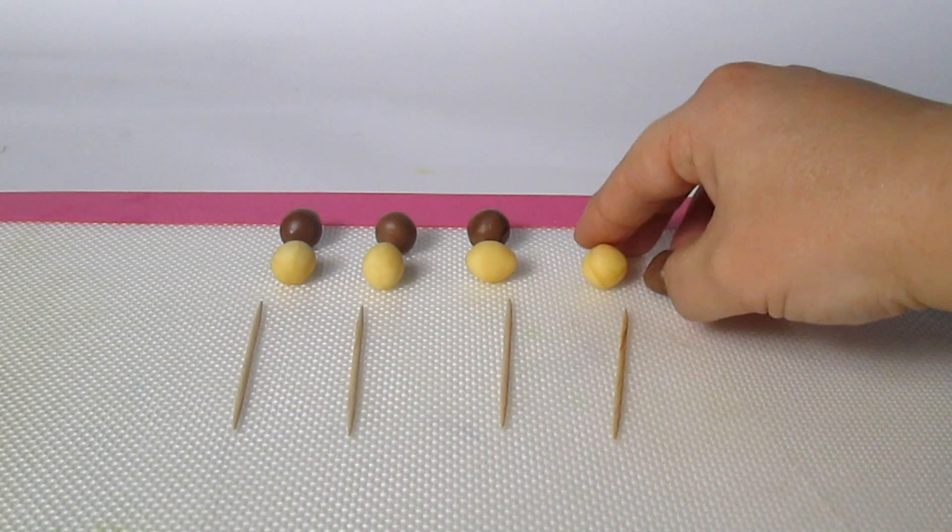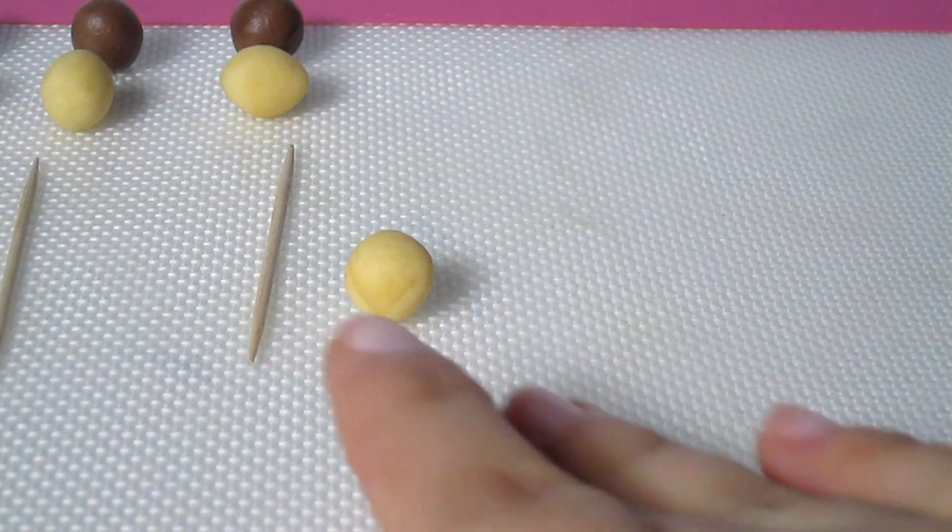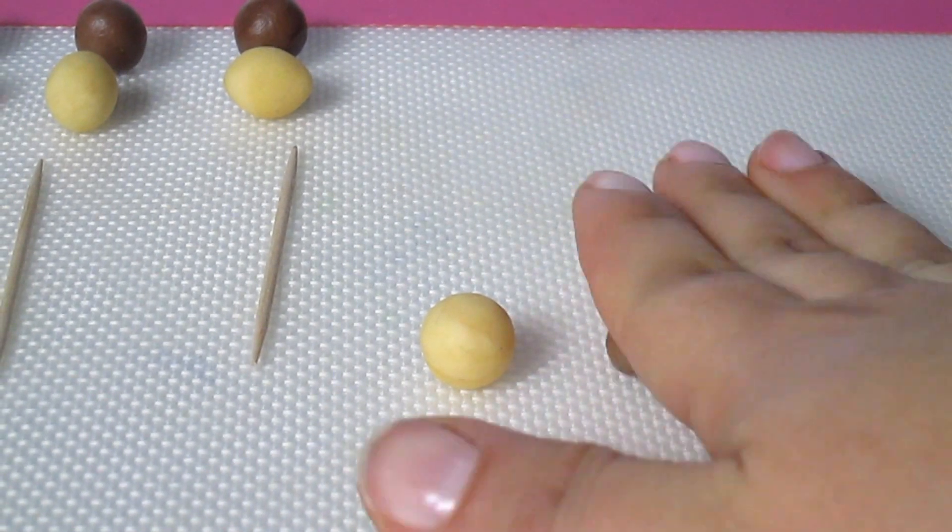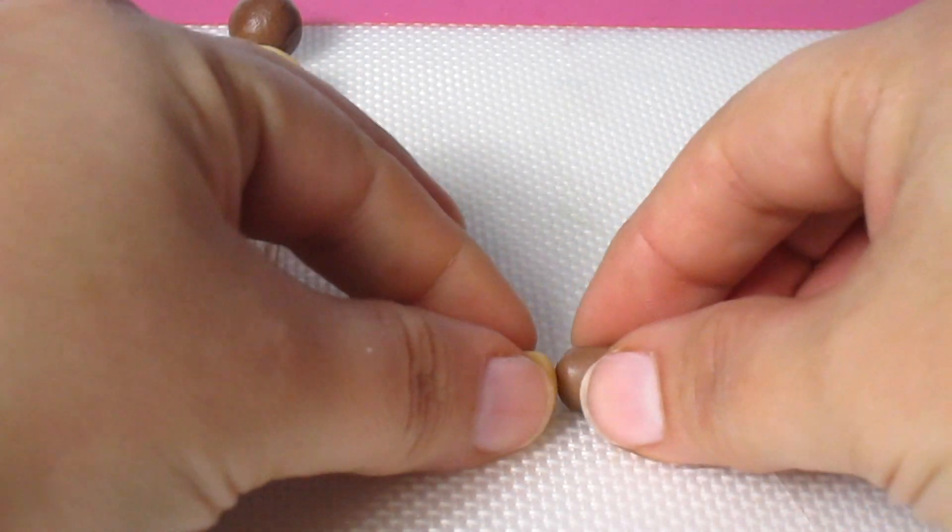First of all, as usual, we're going to start from the bottom, so we're going to make the legs. To do so, we are going to need four small balls of brown and four pale yellow fondant. Stick them together and roll them.